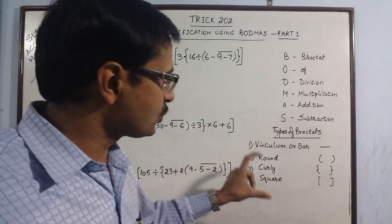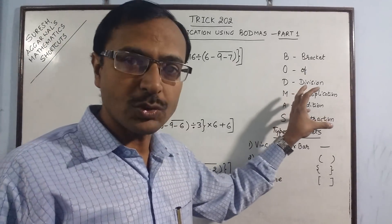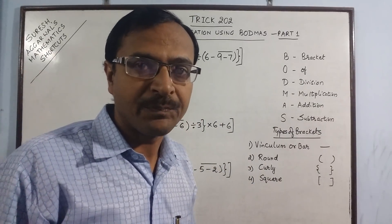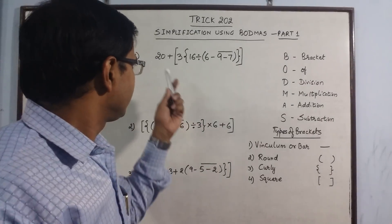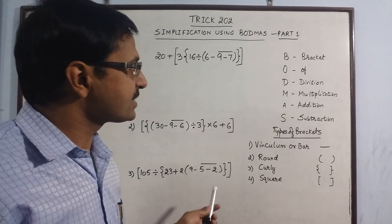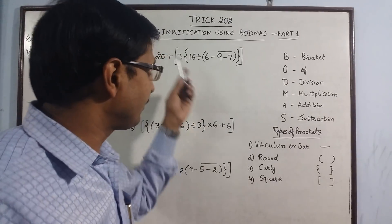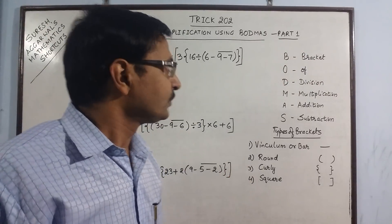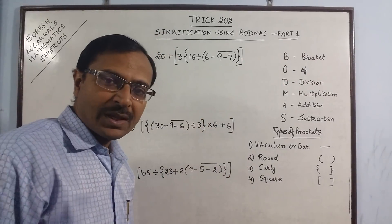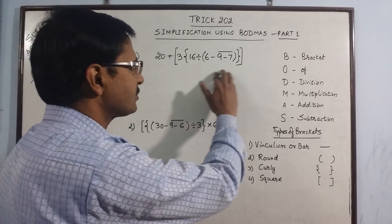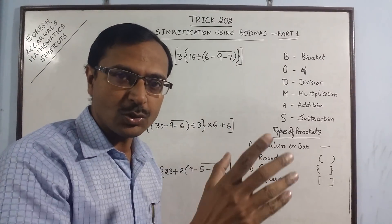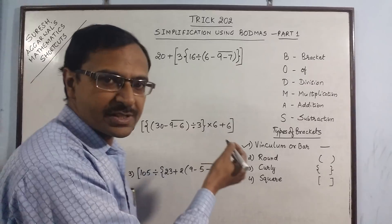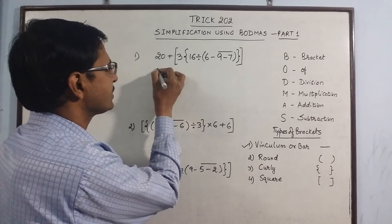If there is confusion about the type of bracket or the priority assigned to the operations, then the answers will not come out correctly. I will illustrate this concept using one or two problems, and then we will solve some typical problems in part two of this video. In the first problem, we have all types of brackets, so we need to look for vinculum first — and here is that vinculum. I am writing all steps so you can understand clearly.